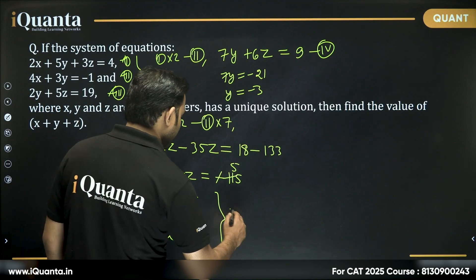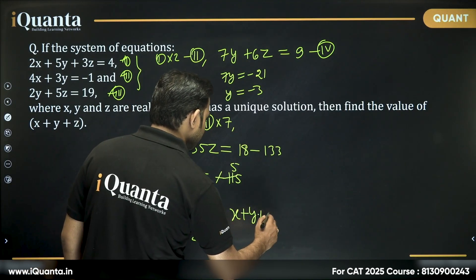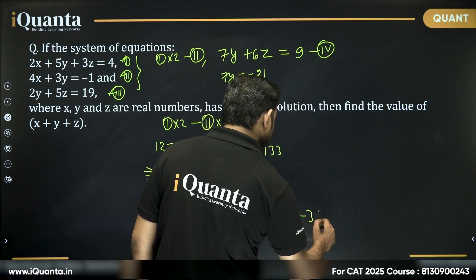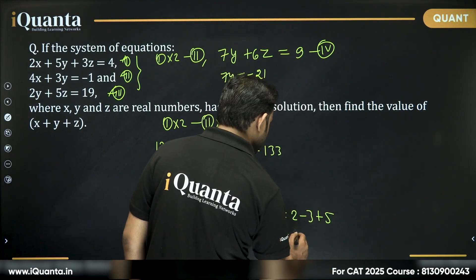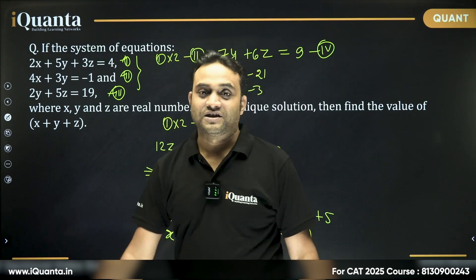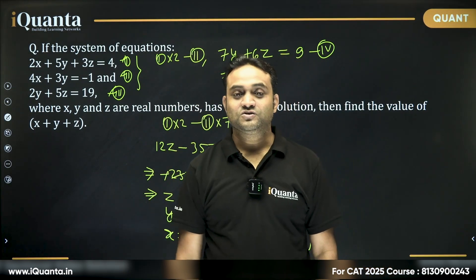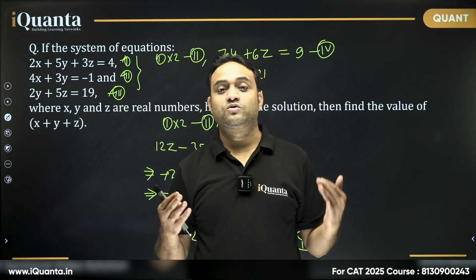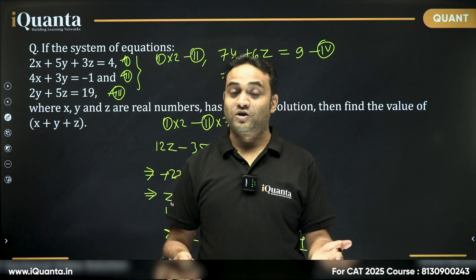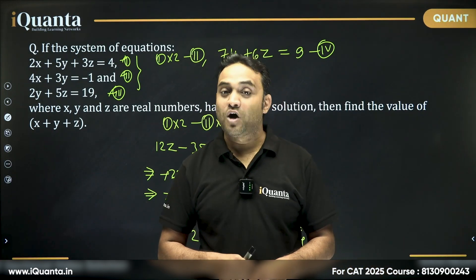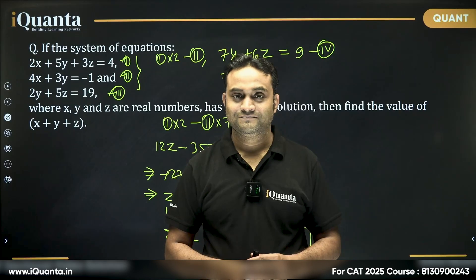If I want to find (x + y + z), this will be equal to 2 - 3 + 5, which equals 4. So our answer for this question is 4. This was a very basic question based on three equations, three variables. This is also important—knowing how to solve three equations, three variables problems in a simpler way.